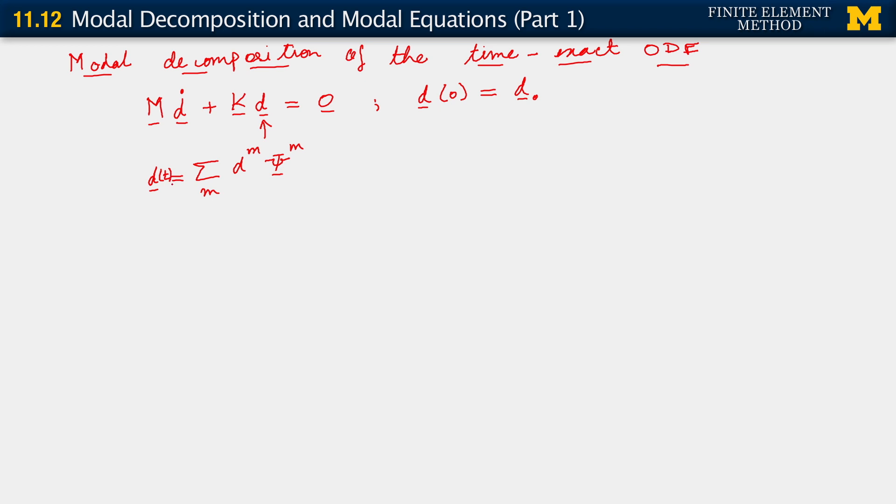Now, remember that this d vector of ours is time dependent. That's why we're able to take a time derivative. So d is a function of time. My question is, where on the right-hand side does that time dependence go? Does it go into the coefficients, the d m's or the psi m's, the eigenvectors? They go in, the time dependence shows up in the d m's.